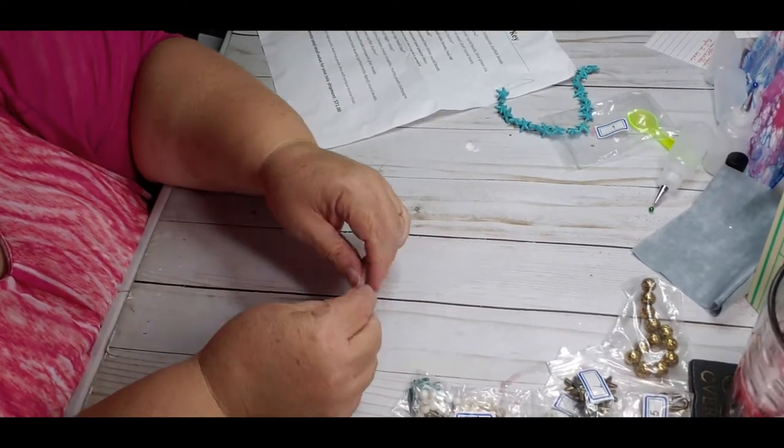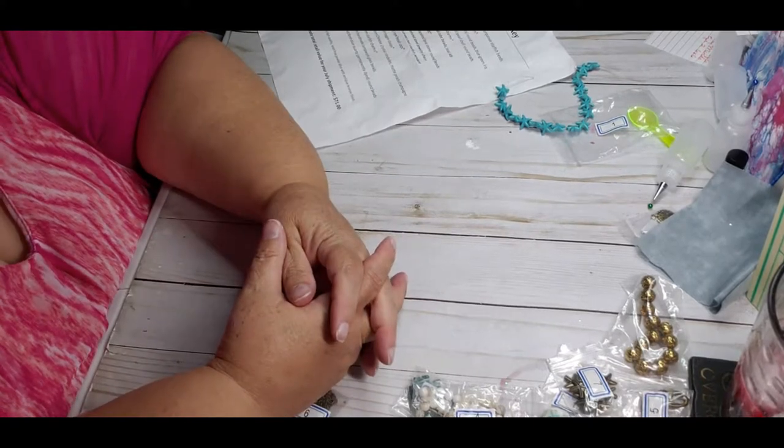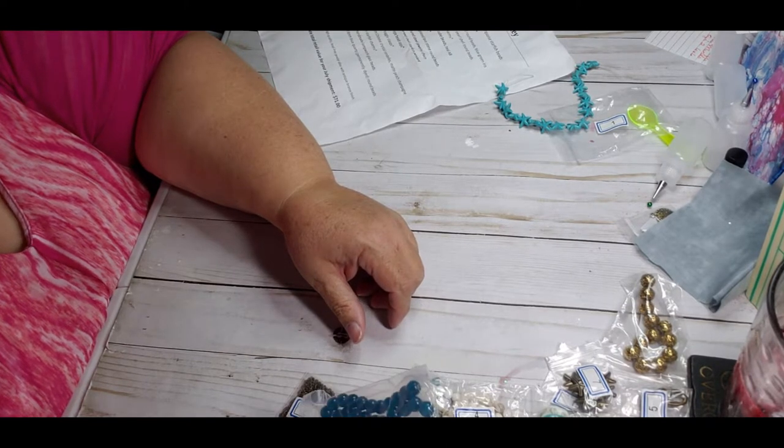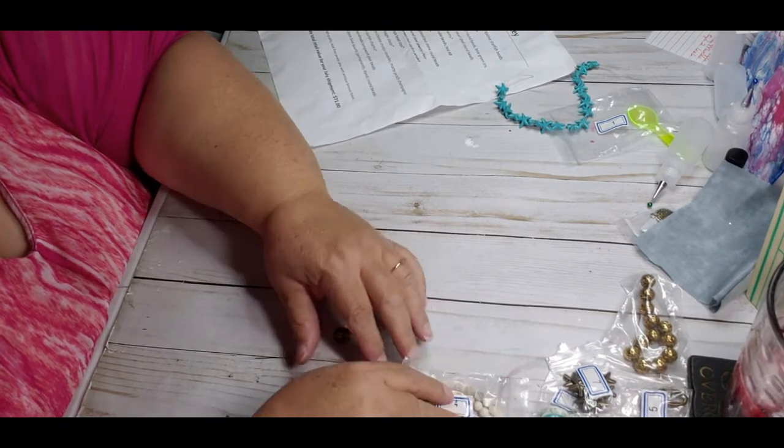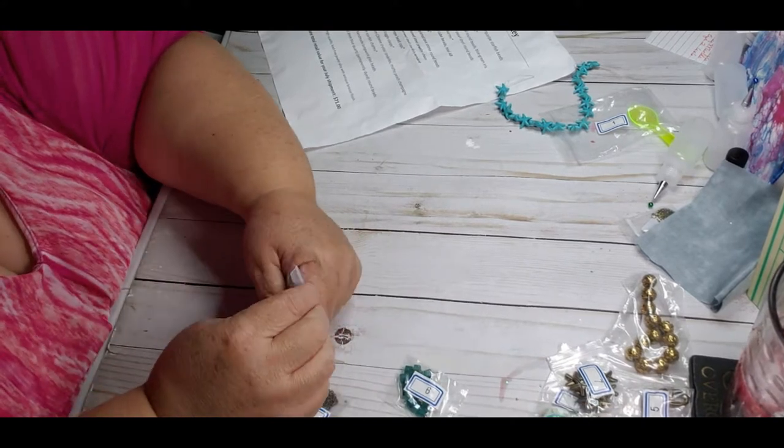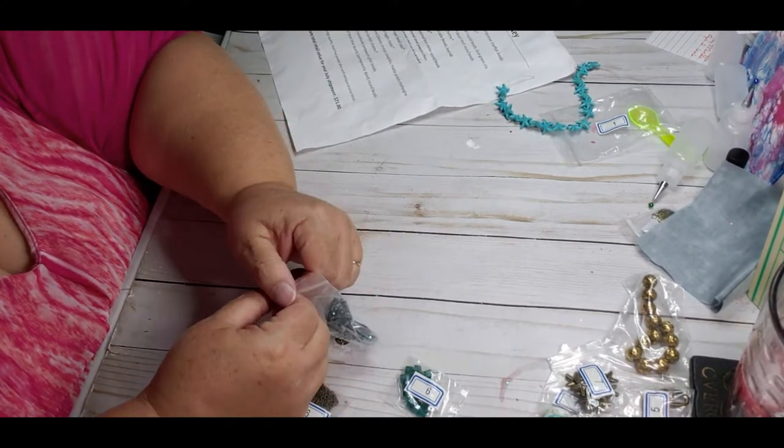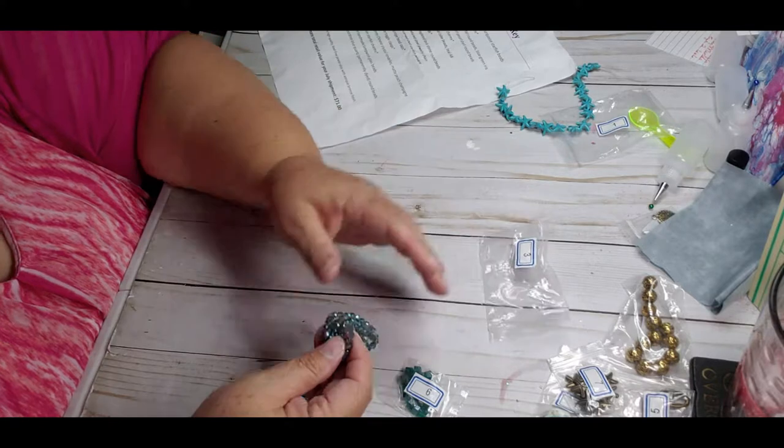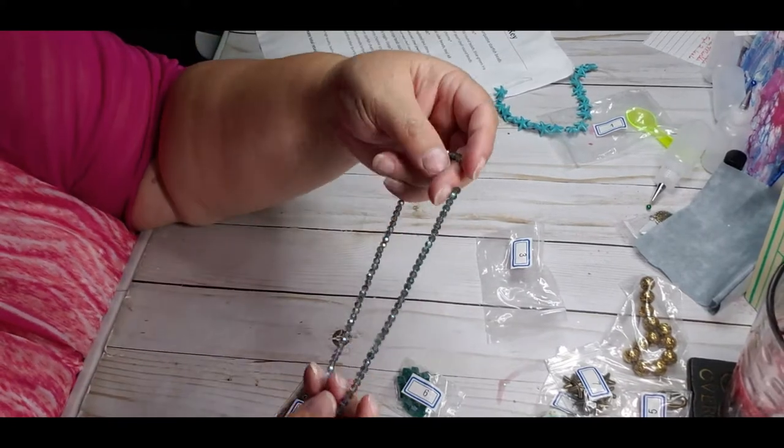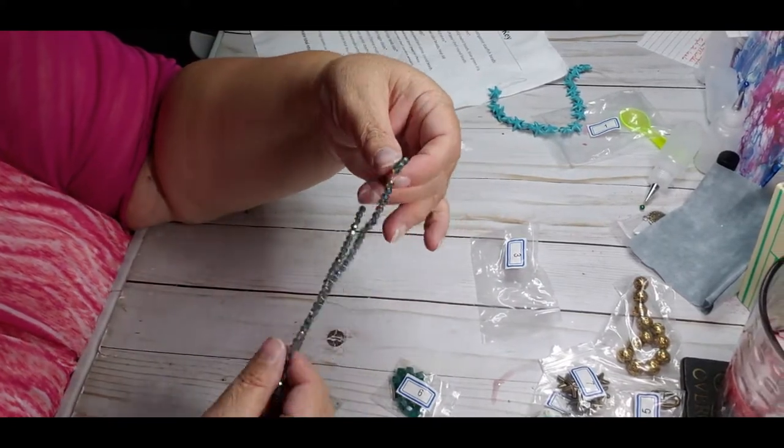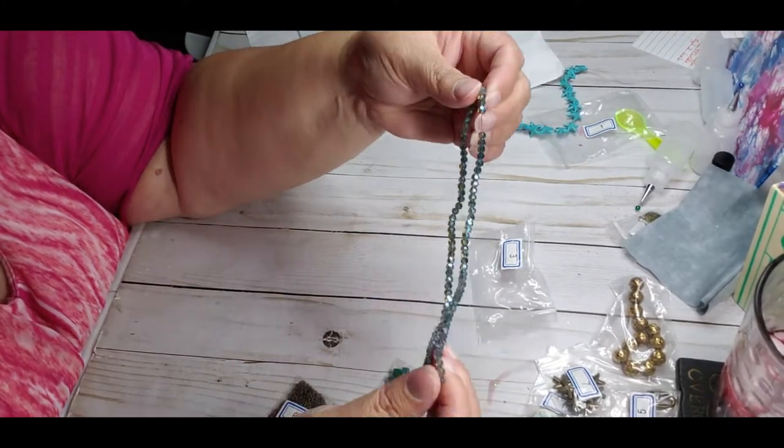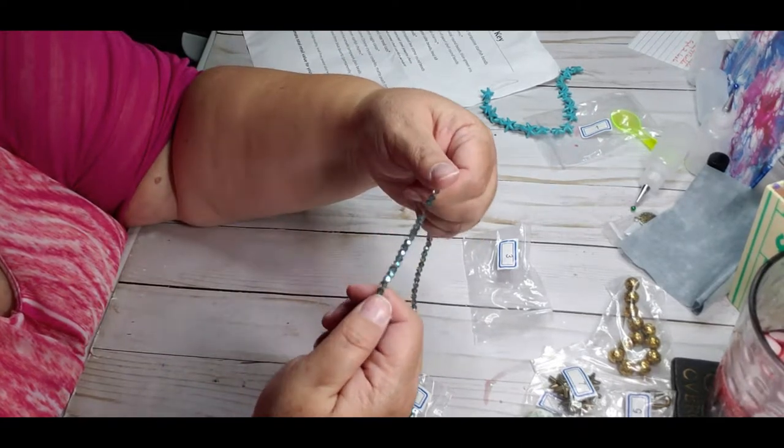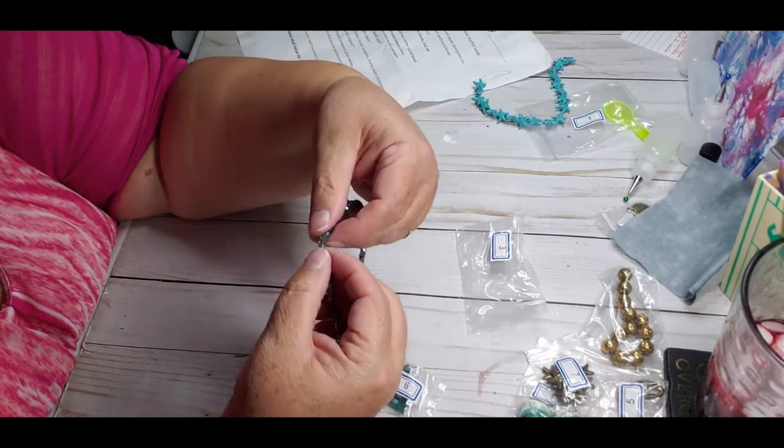Next is a 14 inch strand, four millimeter Chinese crystal round beads, blue green iris. I like that's pretty sparkly. That's all together, you see the sparkles and it says blue green, so yeah definitely I can see the blue green in there. Those are pretty.